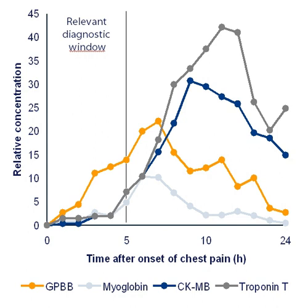A biomarker, or biological marker, is a measurable indicator of some biological state or condition. Biomarkers are often measured and evaluated to examine normal biological processes, pathogenic processes, or pharmacologic responses to a therapeutic intervention.